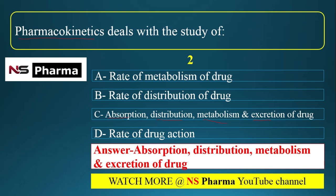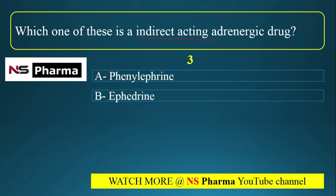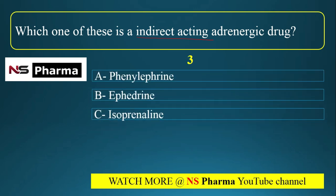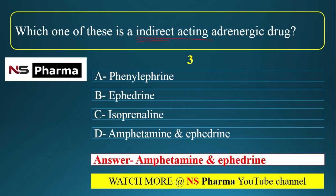Question 3: Which one of these is an indirect-acting adrenergic drug? Options: (a) phenylephrine, (b) ephedrine, (c) isoprenaline, (d) amphetamine and ephedrine. The correct answer is option D: amphetamine and ephedrine.